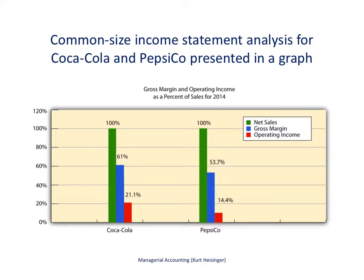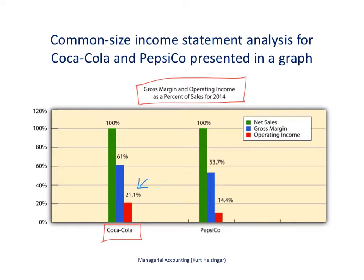This bar graph is just another way to present the same information from the previous slide — a nice visual way to show what's happening with Coca-Cola compared to PepsiCo. On the left we see Coca-Cola, with operating income at 21.1% of net sales, and on the right is PepsiCo at 14.4%. We also see the gross margin percentages, providing a visual comparison of these key metrics between the two companies.